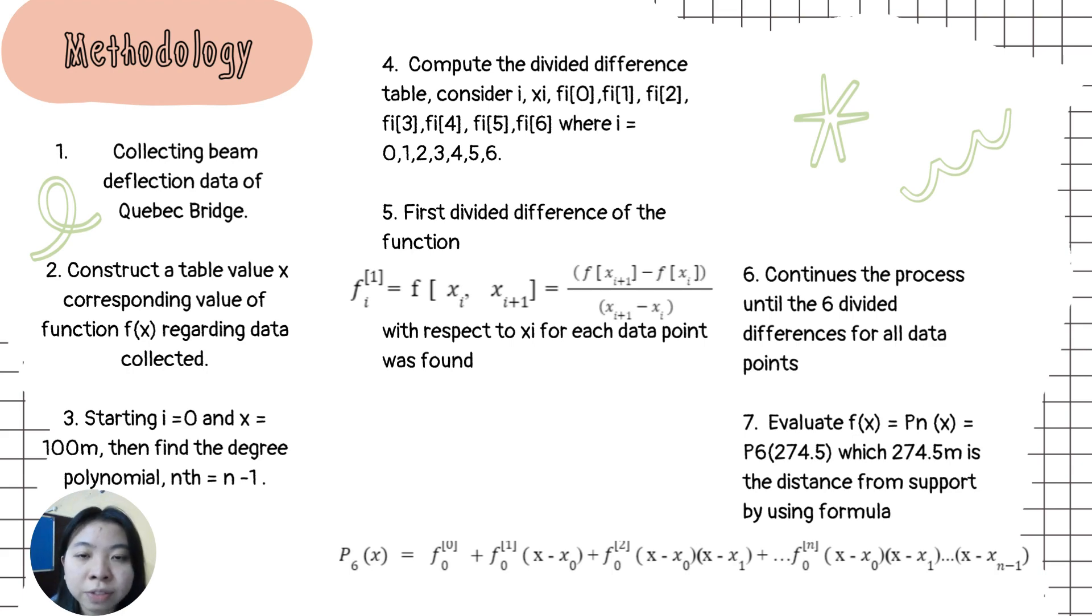Compute the Divided Difference table. Consider i, xi and the first divided difference. Second, third, fourth, fifth and sixth where i is equal to 0, 1, 2, 3, 4, 5 and 6. The first divided difference of the function with respect to xi for each data point was found. Then, continue the process until the sixth divided difference for all data points was calculated.